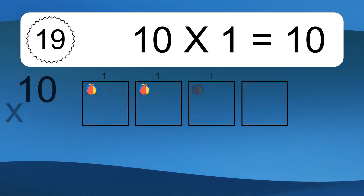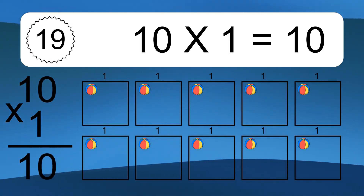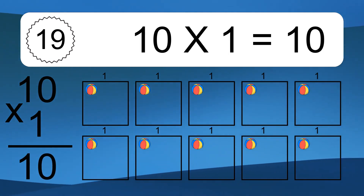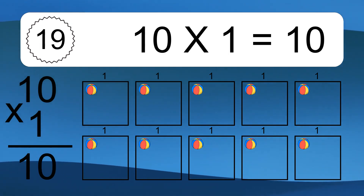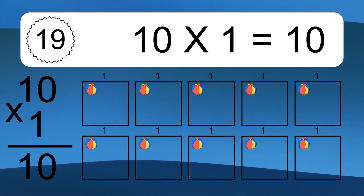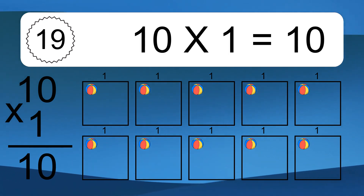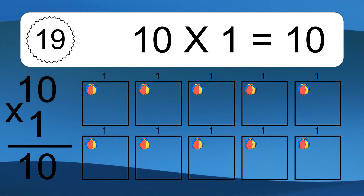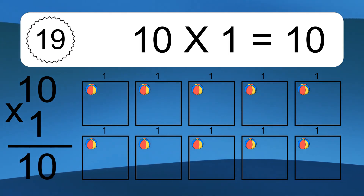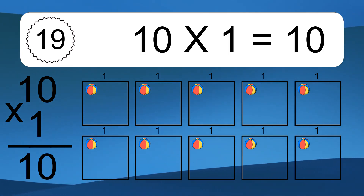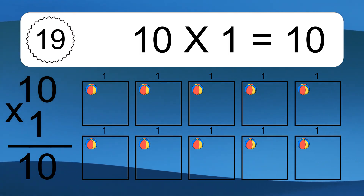10 times 1 equals what? 10 times 1 equals 10. We have 10 boxes and each box has 1 colorful ball inside. If you count all the balls in all the boxes together, you will have 10 times 1 balls. This equals 10 balls.